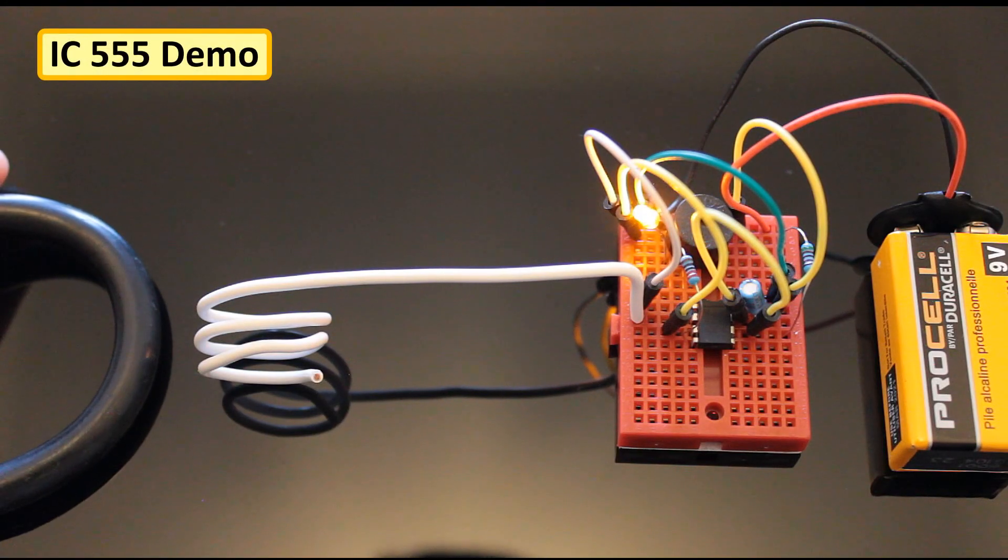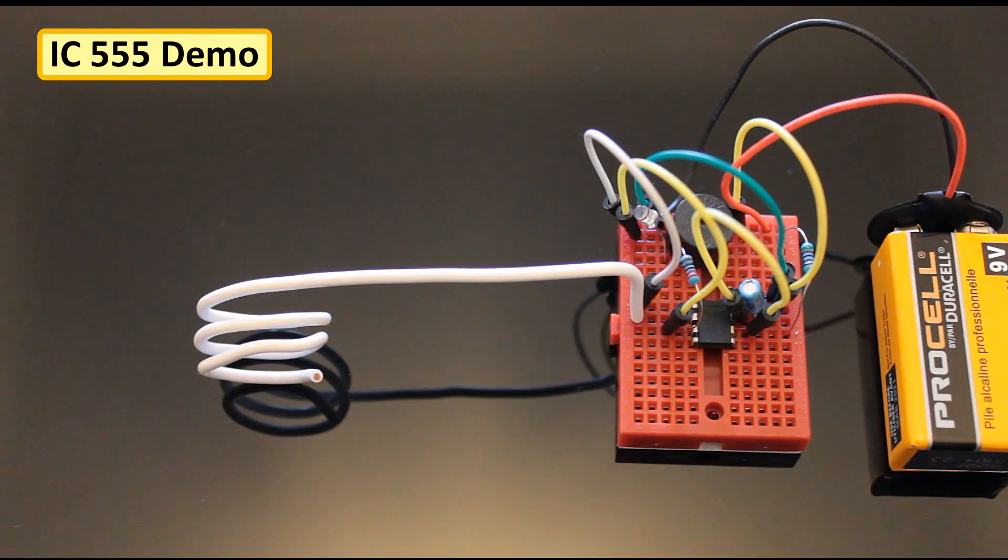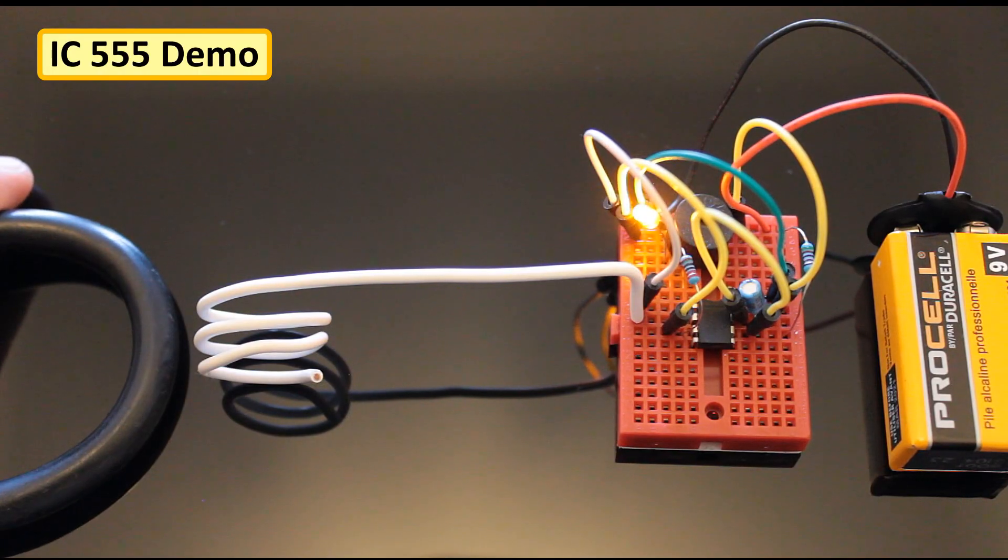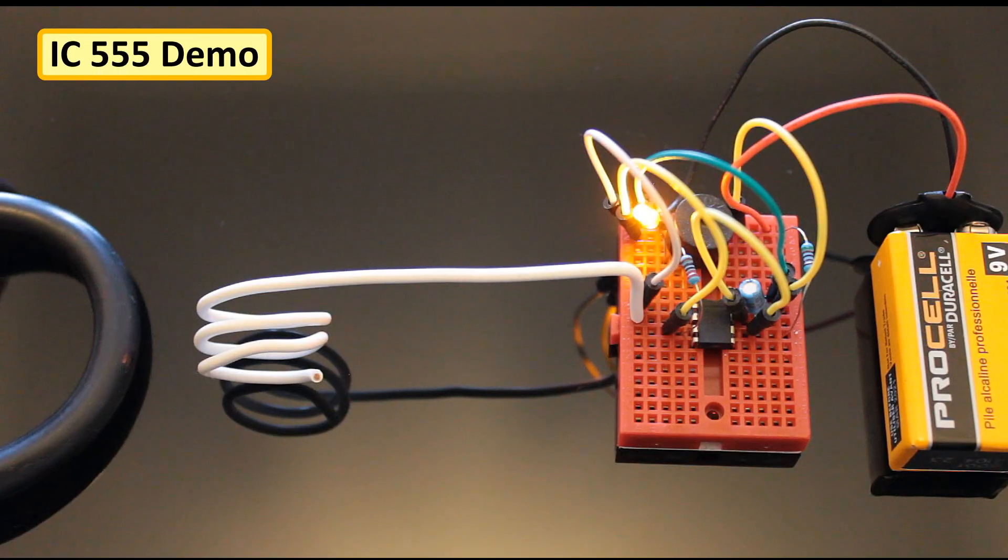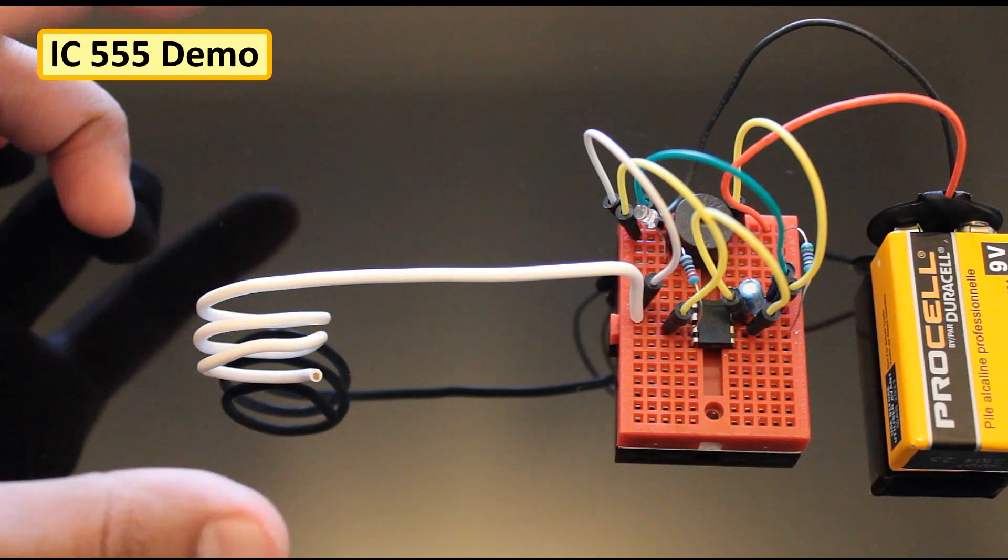This circuit is very simple. When the voltage on pin 2 falls below 1 third of the VCC, the output on pin 3 goes high and the LED lights up. So when the antenna detects an alternating input, the output goes high and low and the LED flashes accordingly.